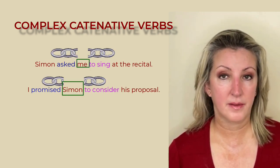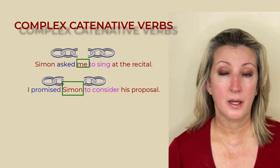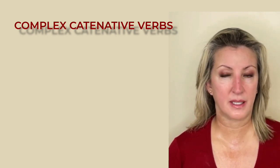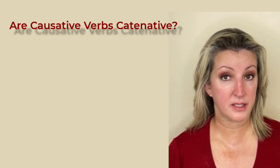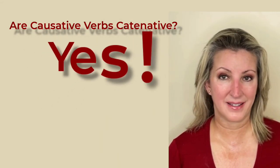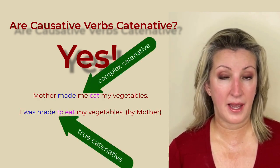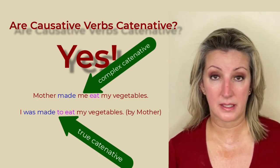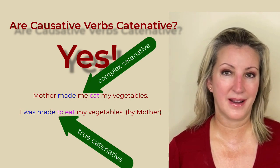It is important to note that many linguists do not consider this structure to be true catenation since the object breaks the chain. Nevertheless, the complex catenative structure is usually taught by most teachers and you'll find it in grammar books. And if you watched the previous lesson on causative verbs, you might have asked yourself, are causative verbs catenated? And the answer is yes, because the causative structure in both the active and the passive show catenation of verbs either in the simple or true catenation or in the complex catenation.